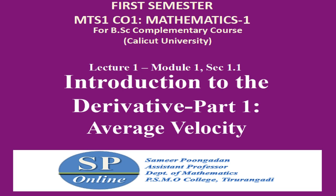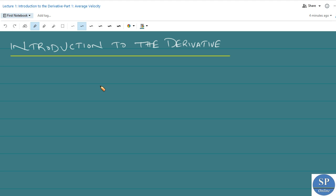Hello everyone. This is my first lecture on first-year complementary mathematics paper based on the syllabus of Calicut University. In this lecture, we will discuss the topic of average velocity and the introduction to the derivative. This is the first section of your syllabus.